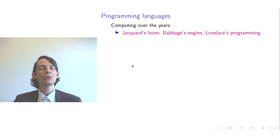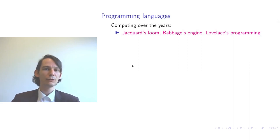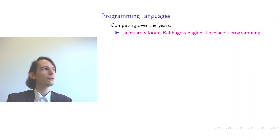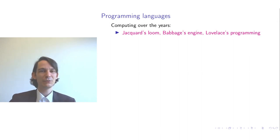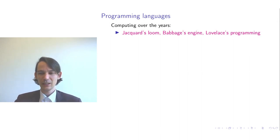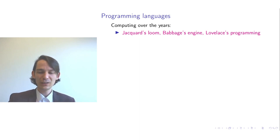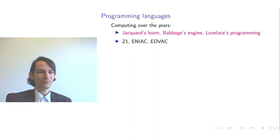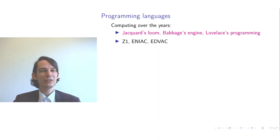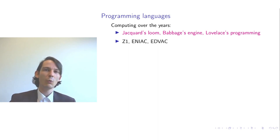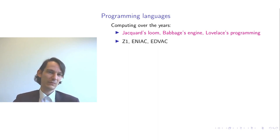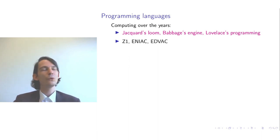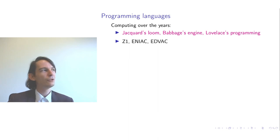So that was around 1800 — Jacquard's Loom and then the development of the difference engine and the analytical engine by Babbage. A lot has happened in computing since the Second World War. The machines now displayed — the Z1, the ENIAC, and the EDVAC — are typical war machines, you could say. The Z1 was built by Konrad Zuse in his home, but unfortunately it was destroyed during a bombing.